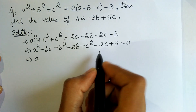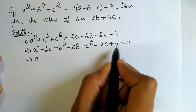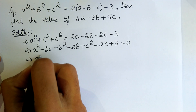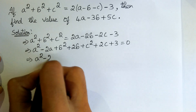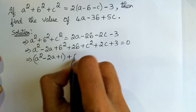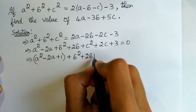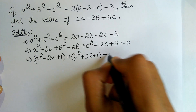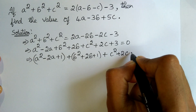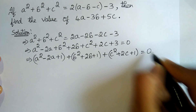For simplification, let us take 3 as 1 + 1 + 1. So we get: a² - 2a + 1 + b² + 2b + 1 + c² + 2c + 1 = 0.